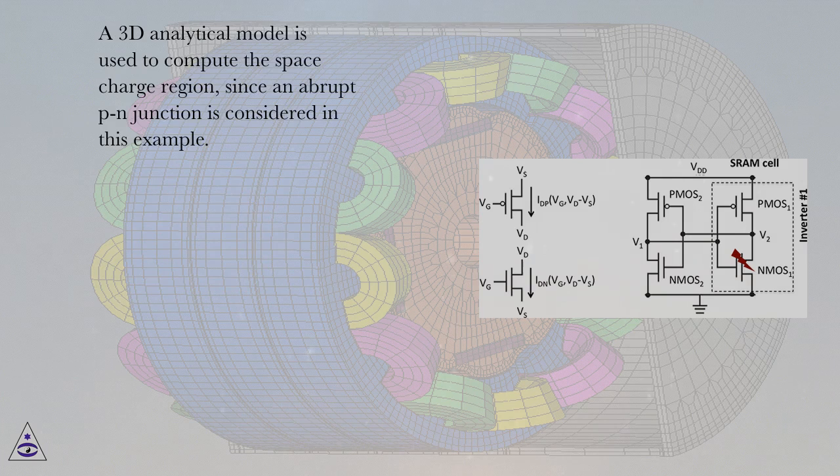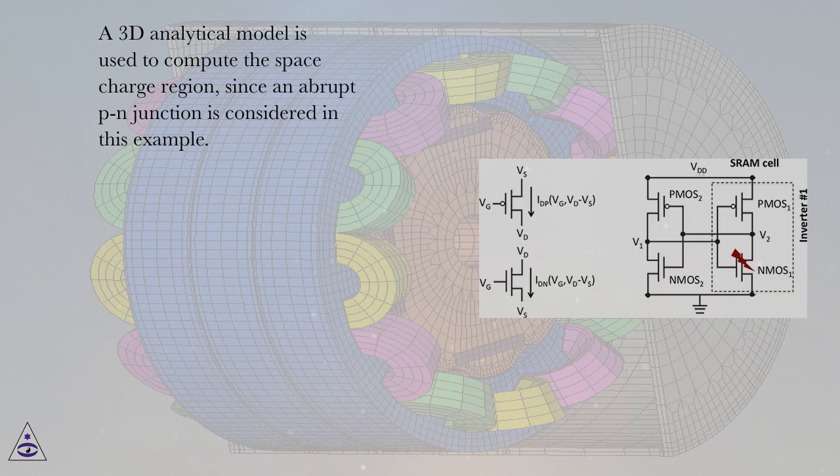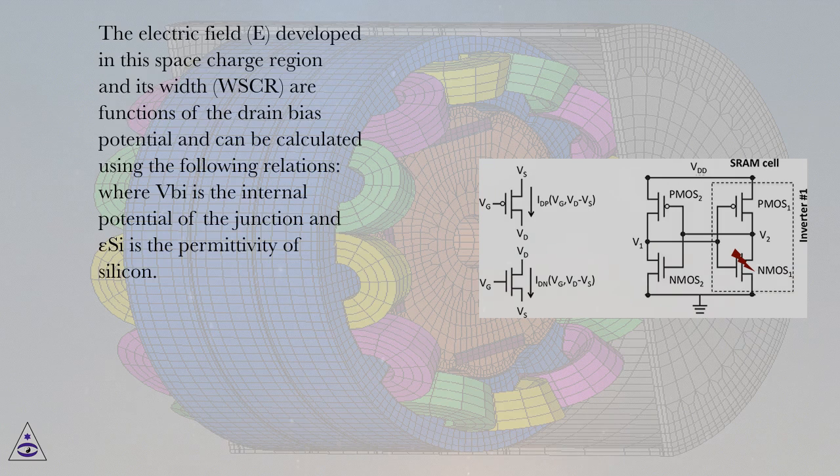A 3D analytical model is used to compute the space charge region, since an abrupt PN junction is considered in this example. The electric field E developed in this space charge region and its width WSCR